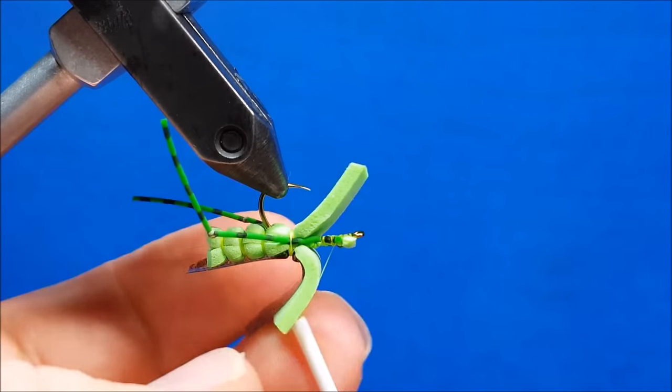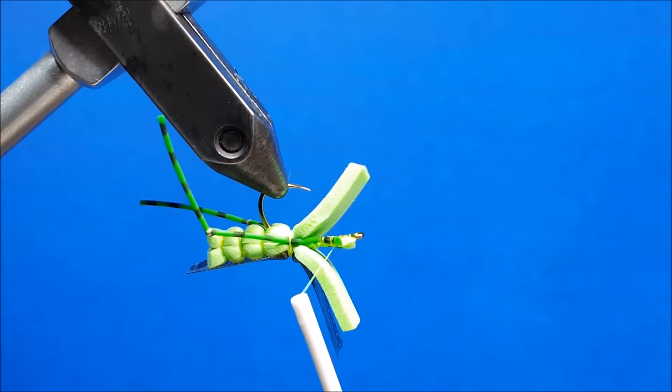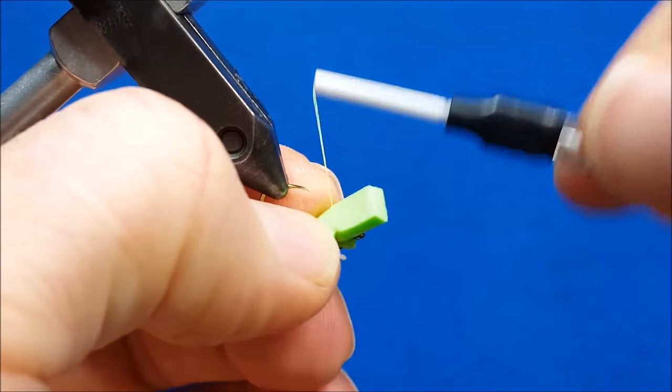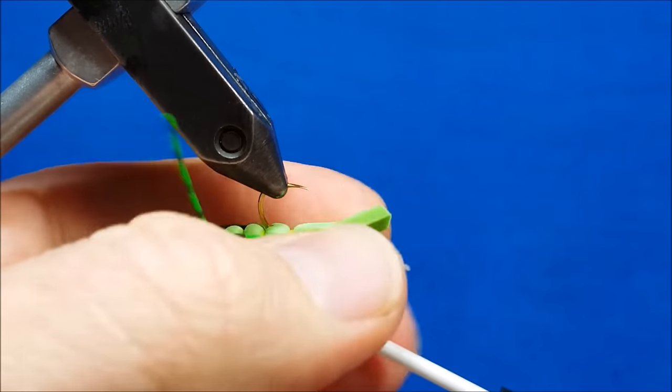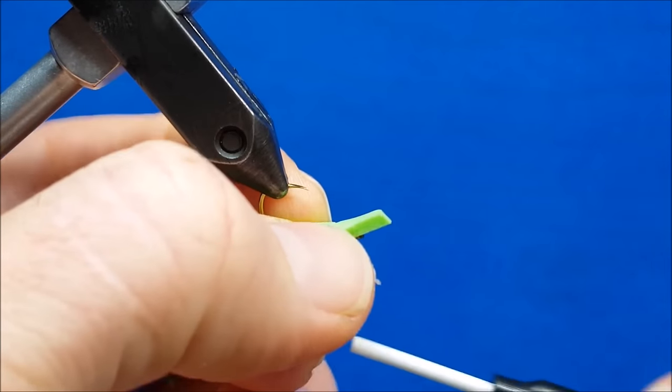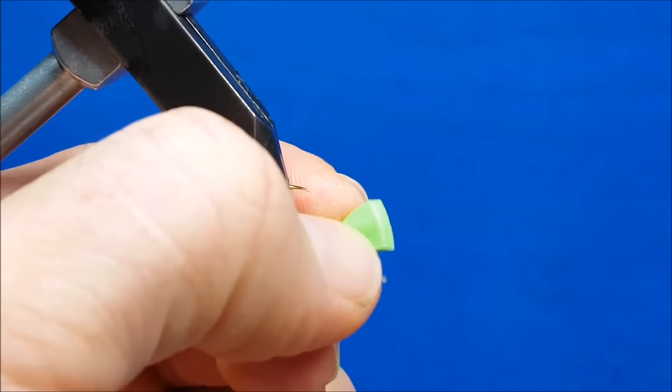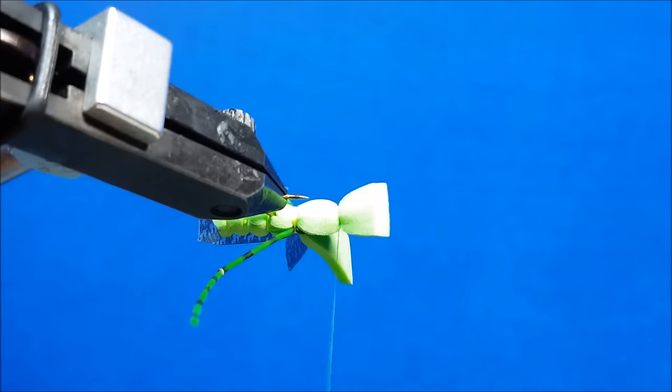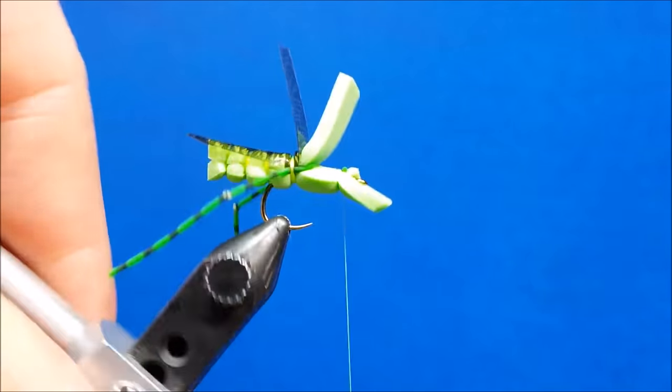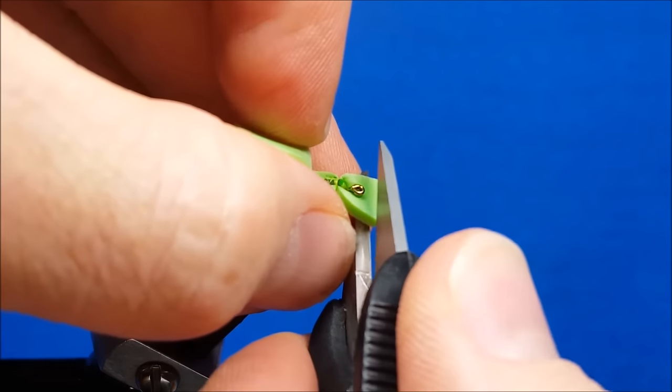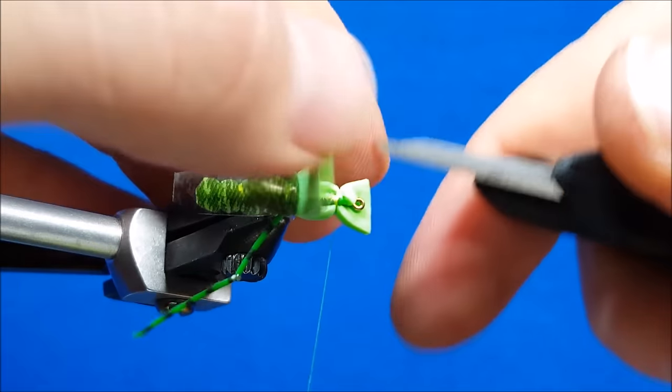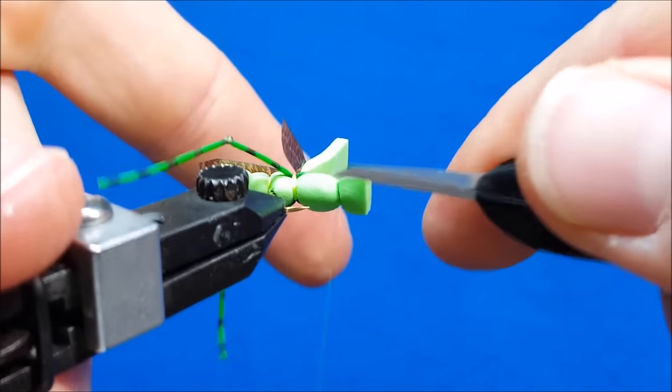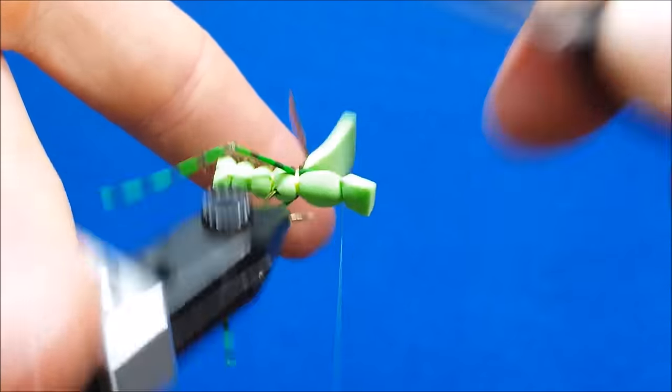Once I've got that there, I'm going to come up about 3/16 of an inch behind the eye of the hook, and grab that piece of foam and pull it down. When you look at this thoracic segment, you want it to be a little bit larger than your abdomen segments. If you look at a grasshopper from underneath, you notice that thoracic segment is larger. Then I'm going to come in here, clip this, and when I come in on the sides of the head, I want to kind of square it off. I want that blocky hopper head look.